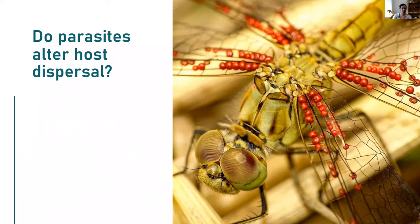We know that parasites can interfere with host dispersal ability. For example, these mites attached to the wings of a dragonfly will impact its flight — the mites can interfere with aerodynamics, damage fragile wing tissue, and drain hemolymph, potentially draining energy. We also might expect that hosts will have an incentive to disperse when they sense they are at risk of parasitism — even if not themselves infected, if they can detect parasites in their environment, they might be motivated to disperse away. I wanted to know how these multiple effects of parasites interacted to influence host dispersal.